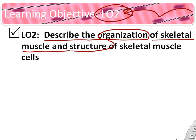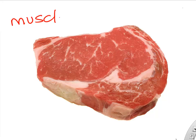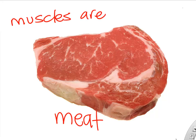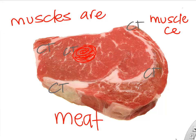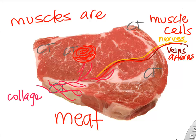Let's talk about the organization and structure of skeletal muscle down to the cellular level. Muscles are basically meat — if you've ever seen a steak, you've seen muscle. It's a lot of connective tissue supporting a bunch of muscle cells or myocytes, with blood vessels and nerves in there supporting, nourishing, and controlling the muscle, and sometimes adipose tissue to cushion it.